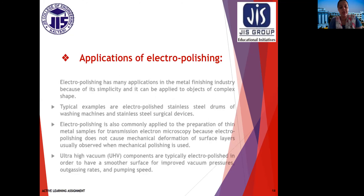Applications of electropolishing include several uses in the metal finishing industry due to its simplicity and applicability to objects of complex shape. Typical examples are electropolished stainless steel drums for washing machines and stainless steel surgical devices. It is also commonly applied to the preparation of thin metal samples for transmission electron microscopy, since electropolishing does not cause mechanical deformation of surface layers. Ultra high vacuum components are typically electropolished to achieve a smoother surface for improved vacuum pressure, outgassing rates, and pumping speeds.